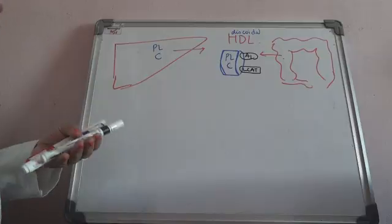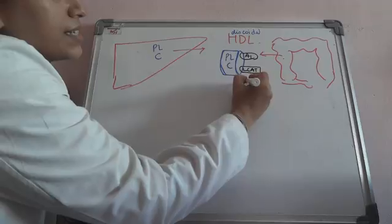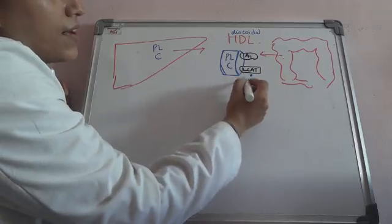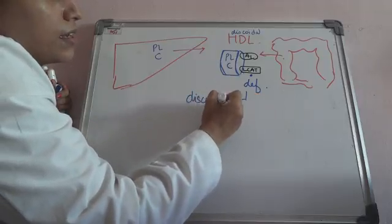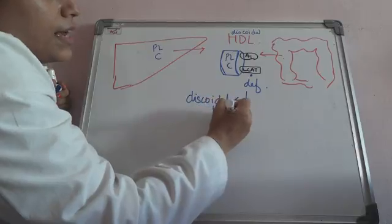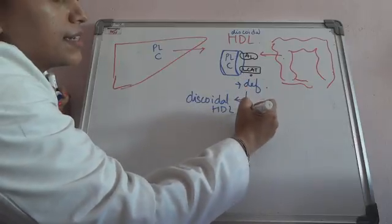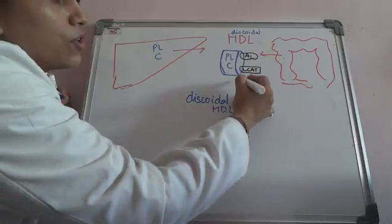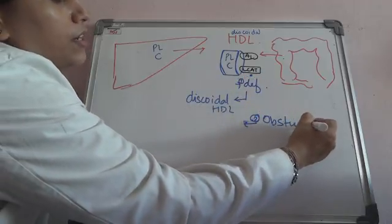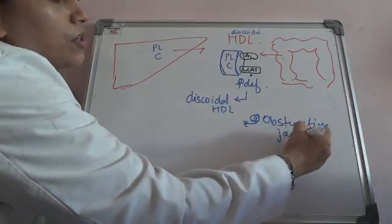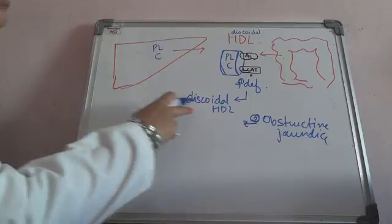One point to be noted: if you do not have LCAT — if LCAT deficiency is there — the particle present in the body will only be discoidal HDL; it will not form further spherical HDL. The second clinical importance is that this is also seen in obstructive jaundice. So the first is LCAT deficiency and second is obstructive jaundice. In obstructive jaundice also you will see discoidal HDL.